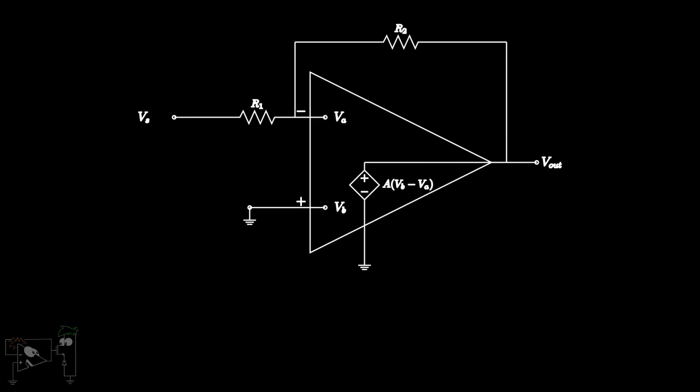When the input is applied, a current starts flowing through the resistor R1. Now as the amplifier is ideal, it has infinite input resistance. Hence, no current flows into the amplifier inputs. Instead, the entire current I flows through R2. Now due to this current I, a voltage VA forms at the inverting input.